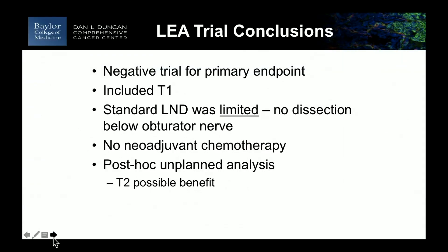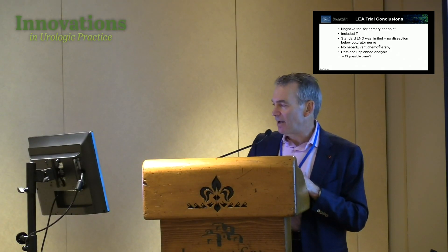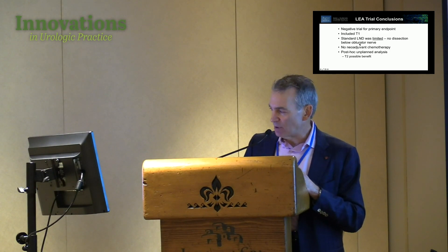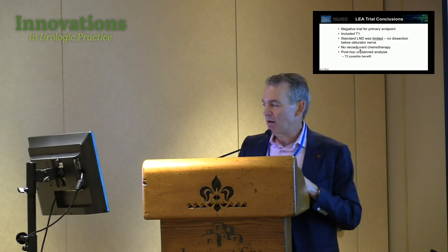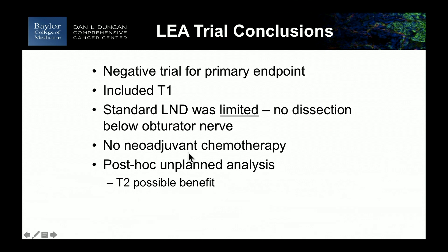Why was it a negative trial? The design included T1s, and they had a significant number of T1 and T2 patients, who would have more favorable outcomes where extended dissection may not add benefit. One caveat: in the 'limited' arm they didn't go below the obturator nerve, which is actually part of standard node dissection. They also a priori did not allow neoadjuvant chemotherapy. There is one post-hoc unplanned analysis possibly showing a benefit in T2 — but that's hypothesis-generating at best.